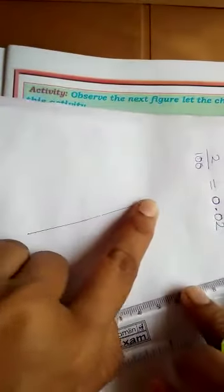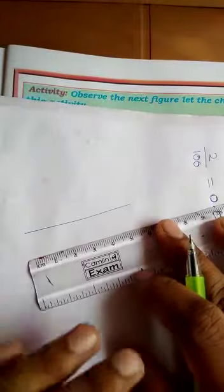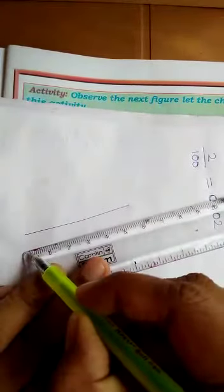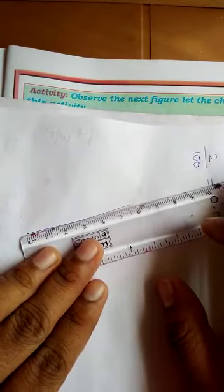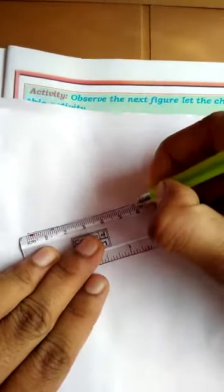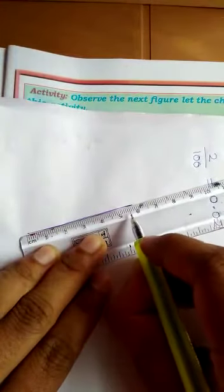Now I draw a line here. I want to measure the length of this line. For that, first 0 coincides with one of the points of the line. Then next.